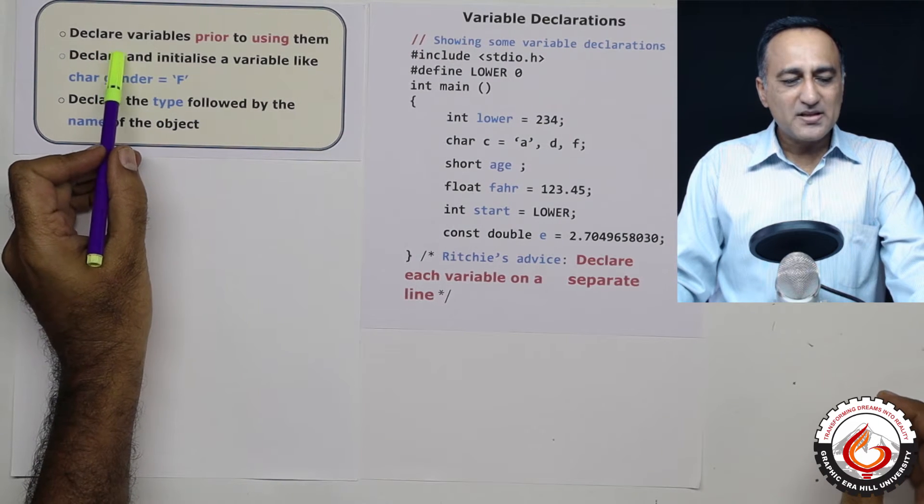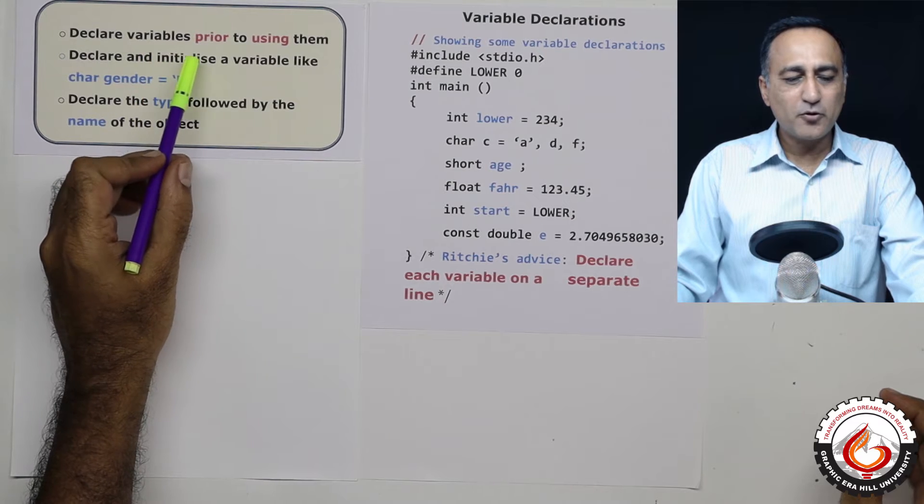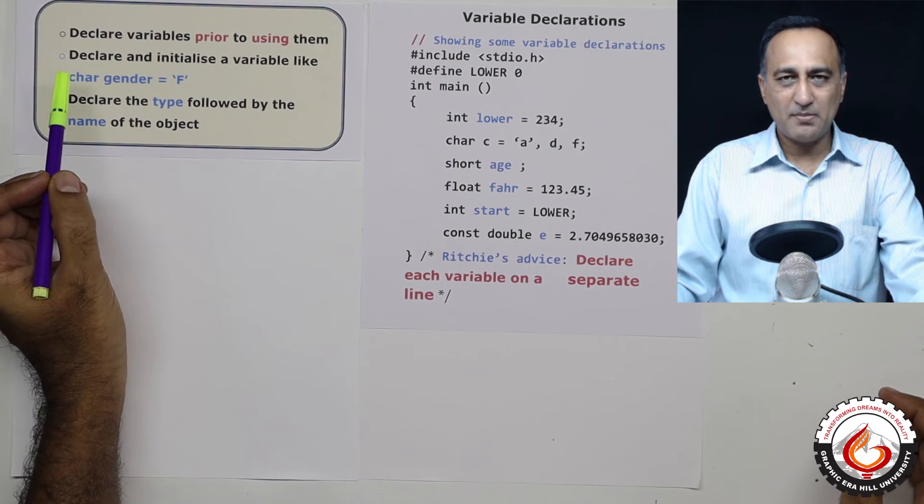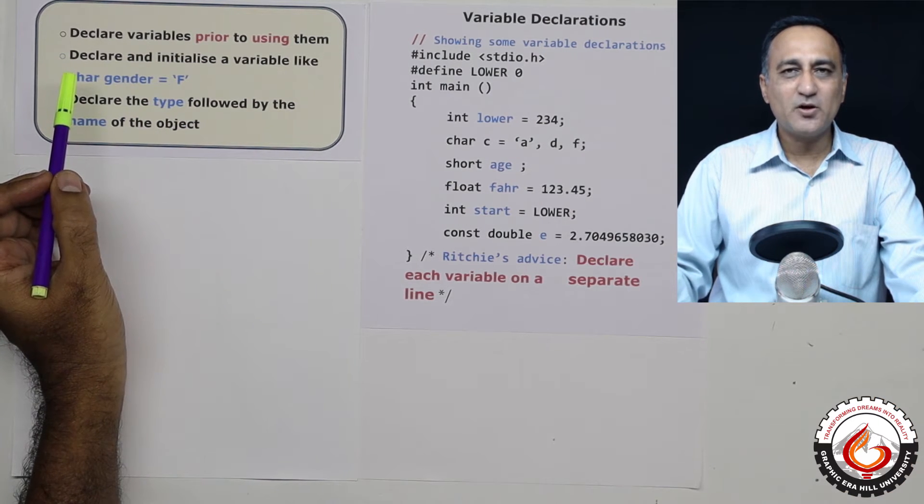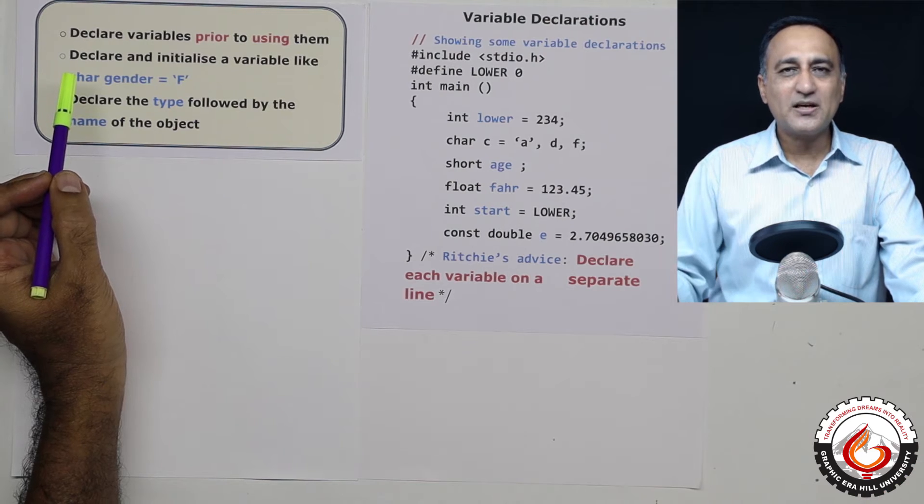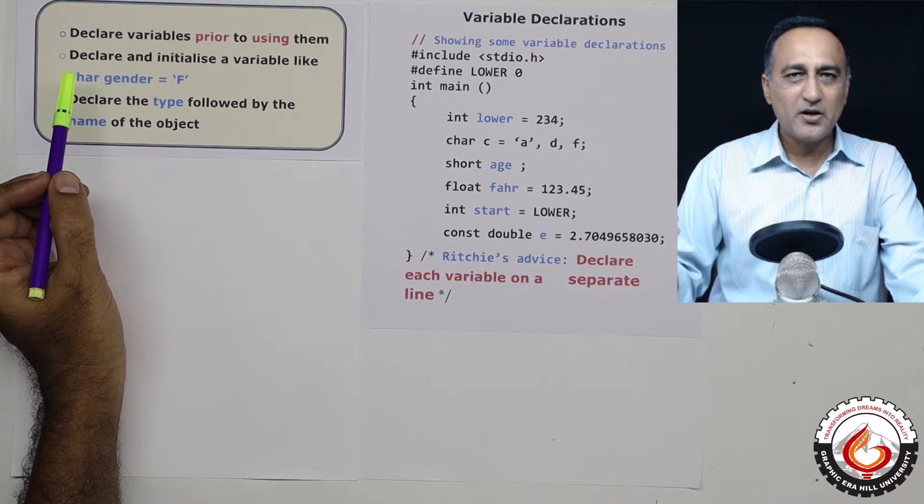You need to compulsory declare variables before using them in C programming. You cannot directly just use a variable without declaring or informing the compiler that you are going to use a particular variable.